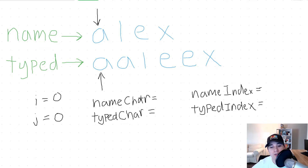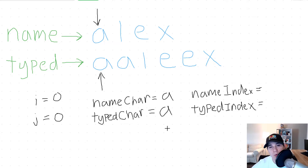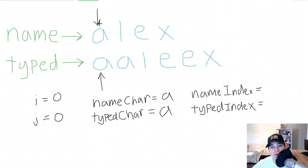Currently, we have both our I and J pointers starting at index zero for both our name and typed strings. We assign the characters we're looking at: name character is A and typed character is also A. We need to determine if these characters are the same — if they are not, we immediately return false. In this case they are the same, so now we count how many characters equal each other in succession. Name index starts at I plus one, so index one. Typed index starts at J plus one, so also one.